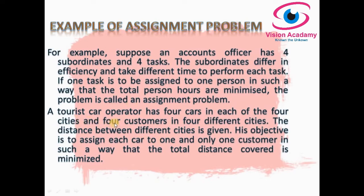One more example: a tourist car operator has four cars in each of four cities, and four customers in different cities. The distance between different cities is given. The main objective is to assign each car to one and only one customer in such a way that the total distance covered is minimized. So one car is assigned to one customer, and the total distance covered by the journey must be minimized. This is what we do in the assignment problem.